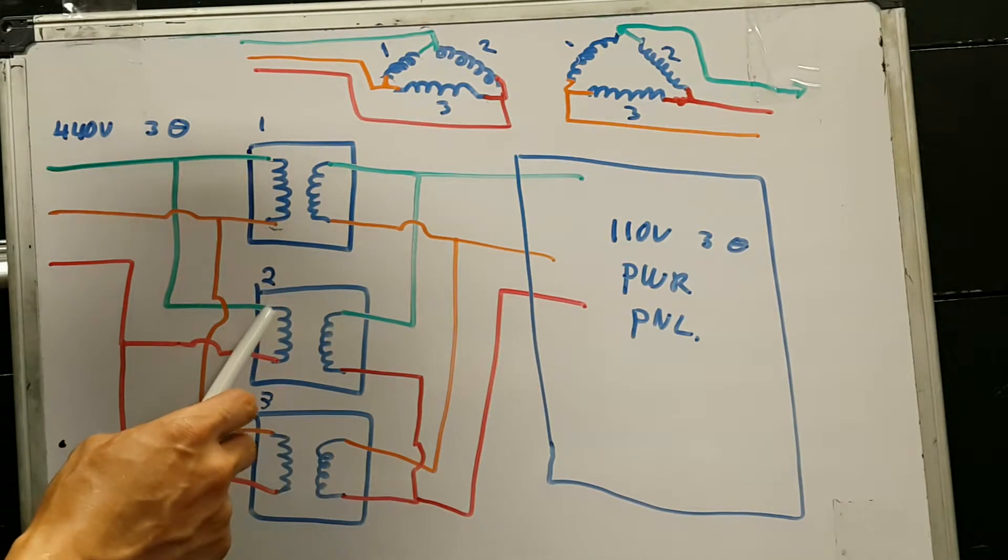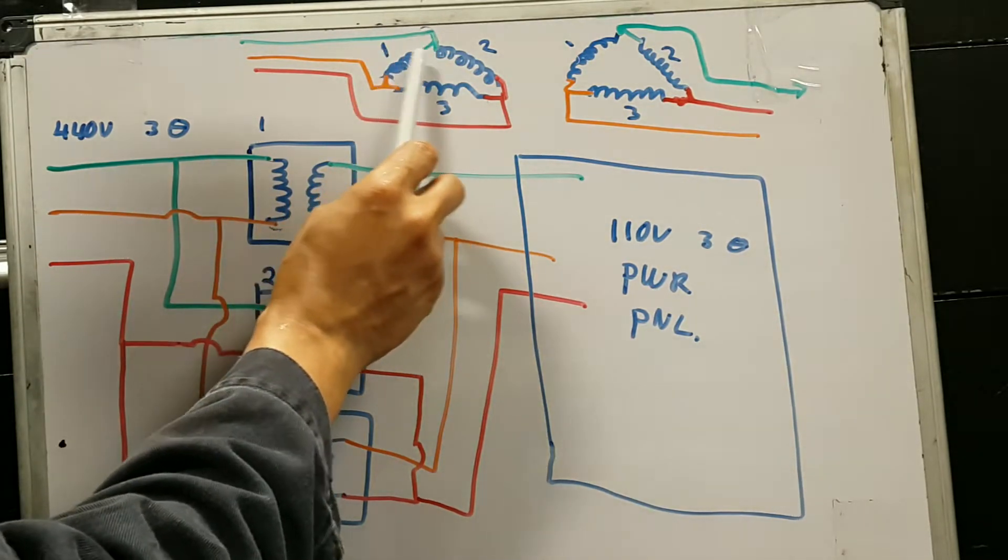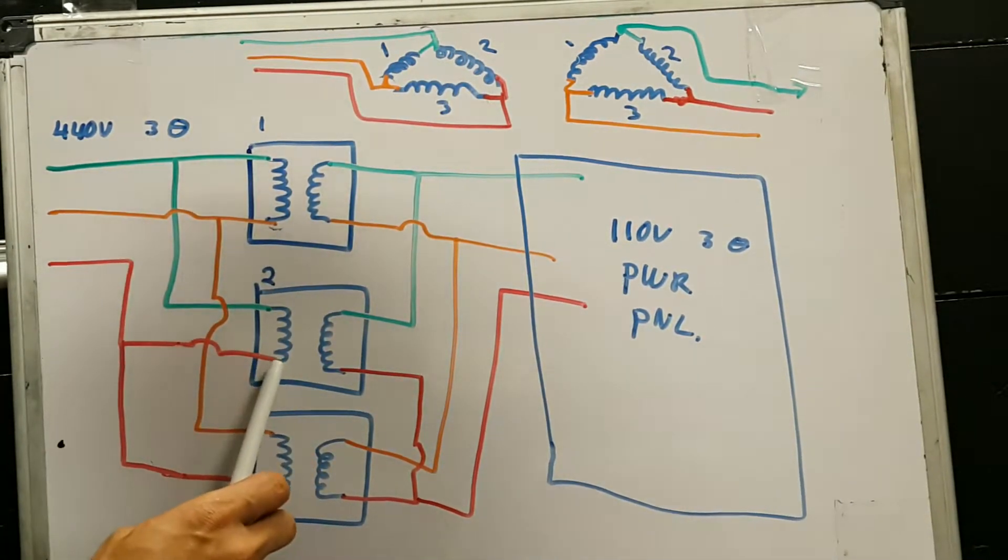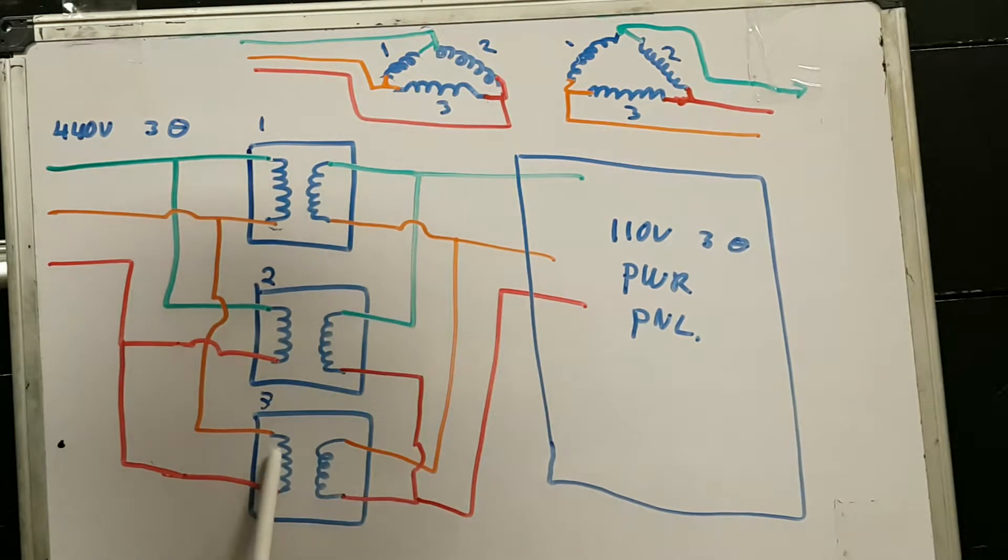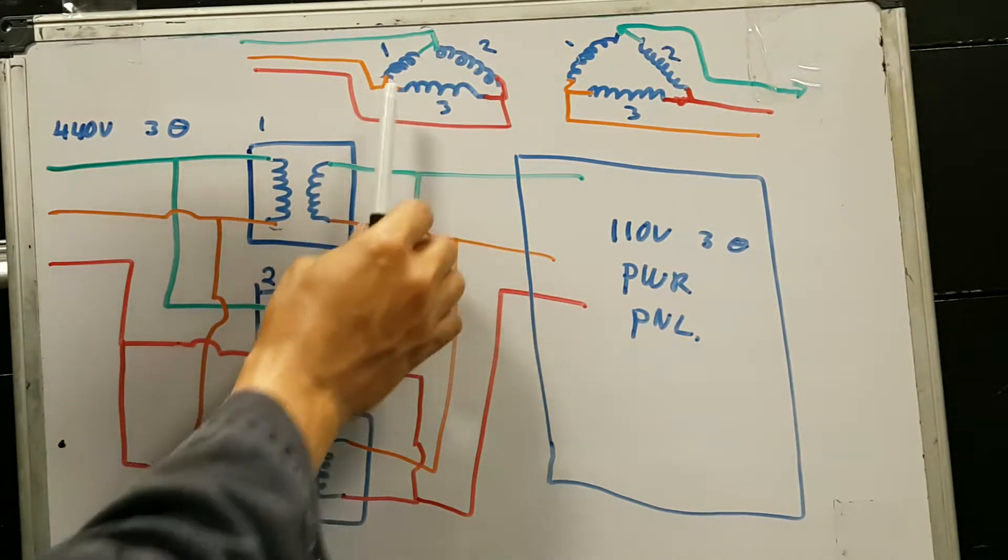and exactly what we got over here, one meets two. One meets two. How about the second one, this one over here? Two meets three, and two meets three. How about this one over here? Three also meets one, and that's what we got over here.